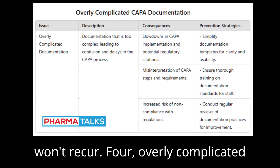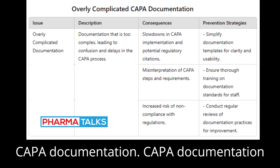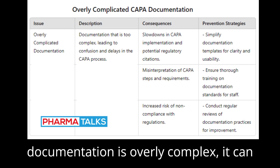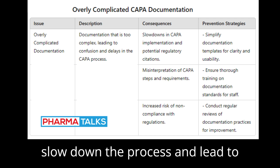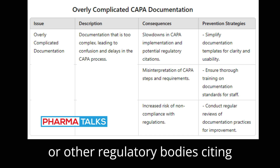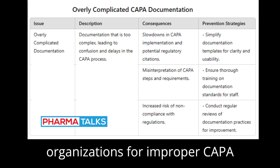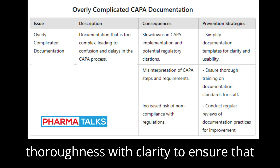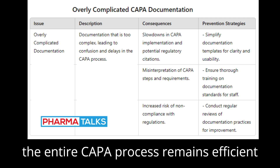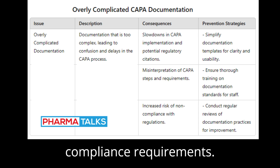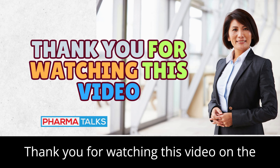Problem 4: Overly Complicated CAPA Documentation. CAPA documentation needs to be detailed yet clear. When documentation is overly complex, it can slow down the process and lead to confusion. This may result in the FDA or other regulatory bodies citing organizations for improper CAPA management. Documentation should balance thoroughness with clarity to ensure the entire CAPA process remains efficient and easy to follow while meeting compliance requirements.